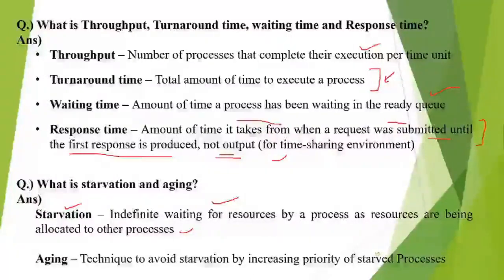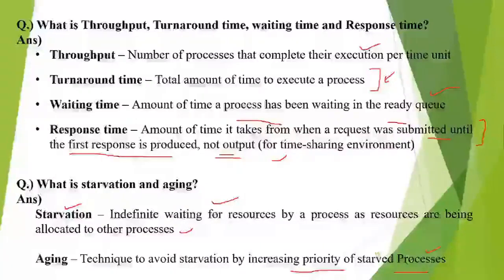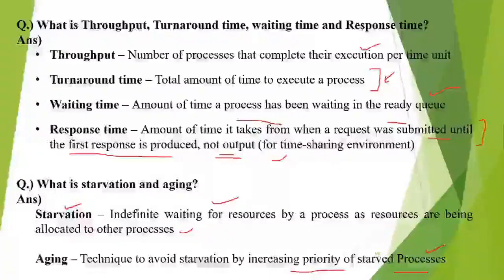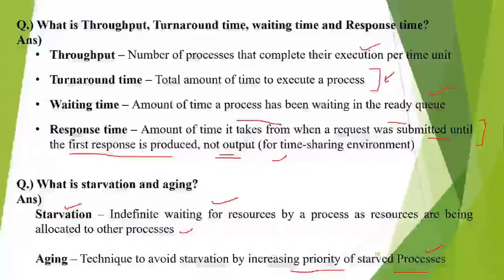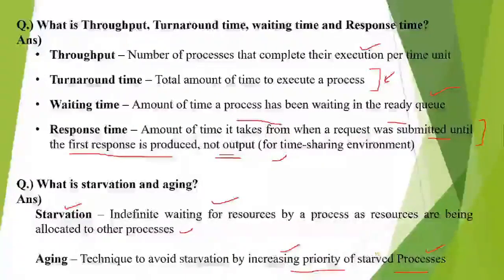Aging is a technique used to prevent or avoid starvation. What we can do is increase the priority of starved processes — processes that have been waiting for an indefinite amount of time. By increasing the priority of a process, the CPU will be given to it, since the CPU allocates based on priority. A system process with higher priority gets the CPU over a user process. So aging increases the priority of a starved process so that it might eventually get the CPU.